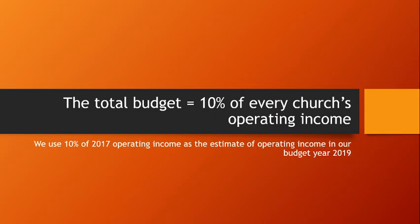I download this operating income number for every church, total it to get the total operating income of all of our churches, then take that times 10%. That's how much we would have collected in 2017 if every church had tithed. Now it becomes the ceiling for our 2019 conference budget proposal.